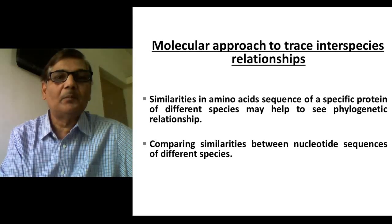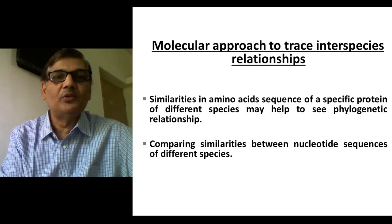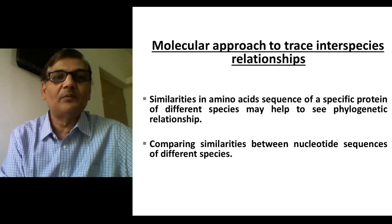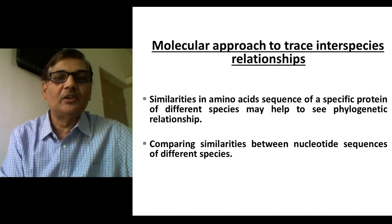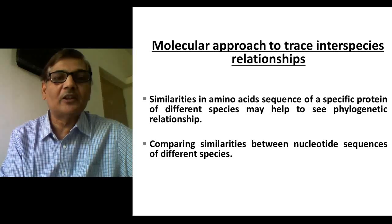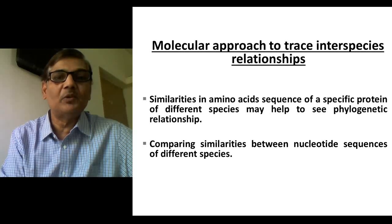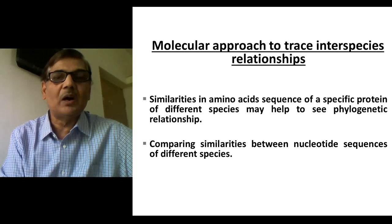The molecular approach to trace inter-species relationships forms the area of molecular phylogeny. The markers which can be considered to study molecular phylogeny could be the sequence of amino acids and the nucleotide sequence — these are the two markers.